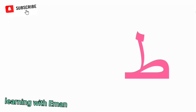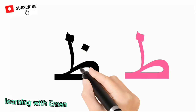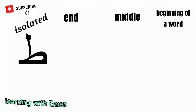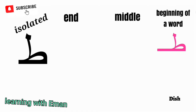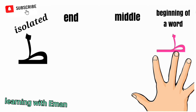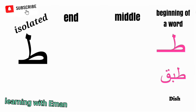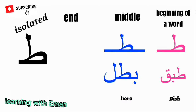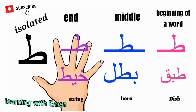The next letters of the Arabic alphabet are Ta and Za. Ta and Za look very similar except that Ta has no dots and Za has one dot on top. Ta sounds like the letter T but it is much, much thicker sounding. At the beginning of a word, like 'Tabaq', meaning dish. At the middle of a word, like 'Batal', meaning hero. At the end of a word, like 'Khayit', meaning string.